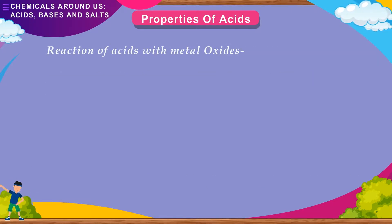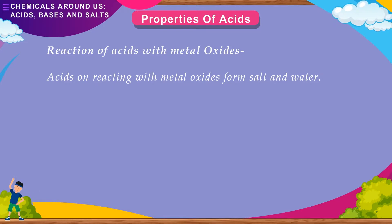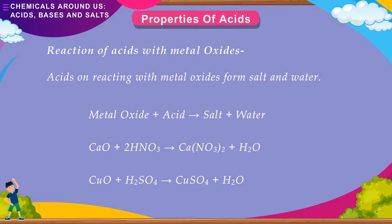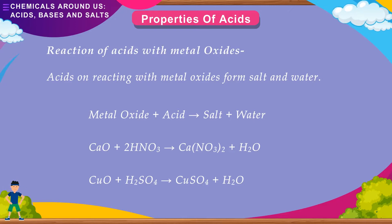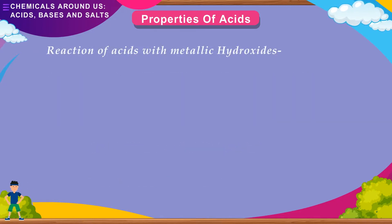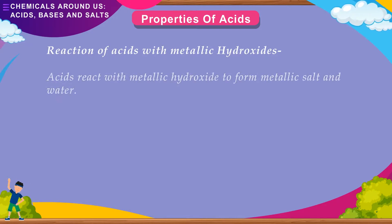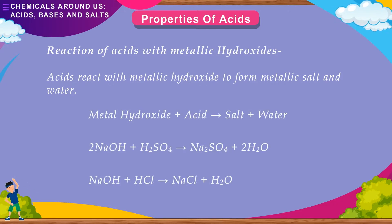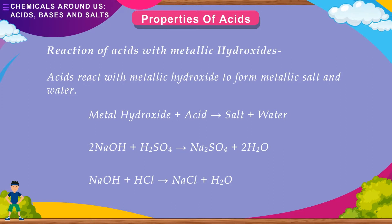Reaction of acids with metal oxides: Acids reacting with metal oxides form salt and water. Metal oxide + Acid → Salt + Water. CaO + 2HNO₃ → Ca(NO₃)₂ + H₂O. CuO + H₂SO₄ → CuSO₄ + H₂O. Reaction of acids with metal hydroxides: Acids react with metallic hydroxides to form metallic salt and water. Metal hydroxide + Acid → Salt + Water. 2NaOH + H₂SO₄ → Na₂SO₄ + 2H₂O.